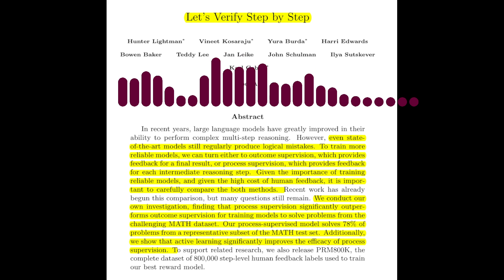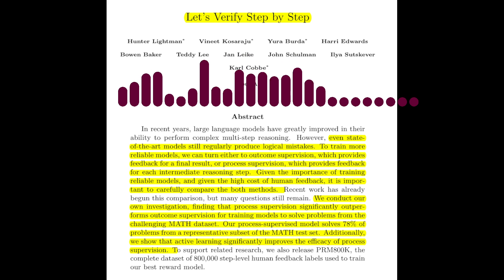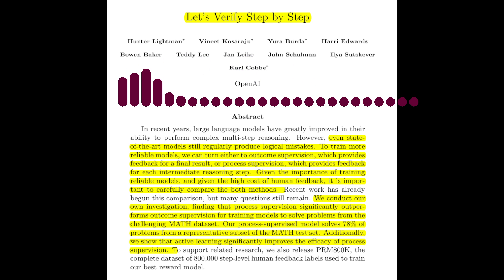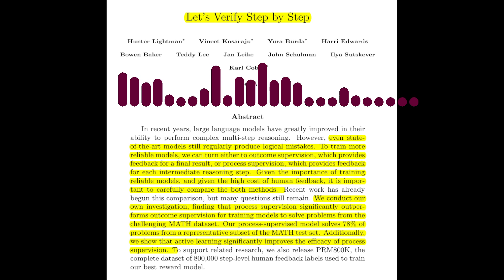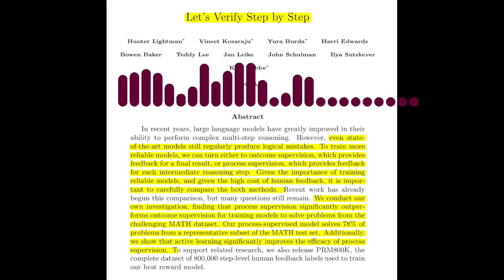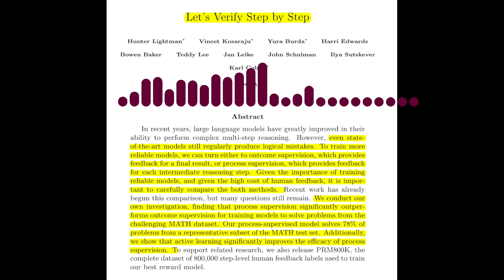The paper investigates two approaches to address this: outcome supervision and process supervision. Outcome supervision focuses on providing feedback based on the final result of the model's reasoning process — it essentially tells the model whether the final answer is correct or incorrect. Process supervision, on the other hand, provides feedback for each intermediate step in the reasoning chain, pinpointing the exact location of any errors that occur.